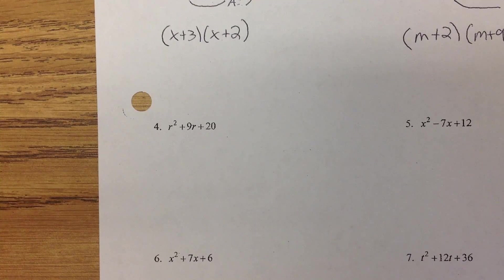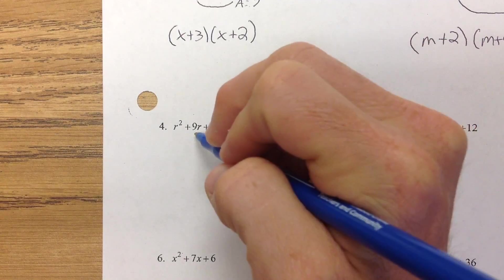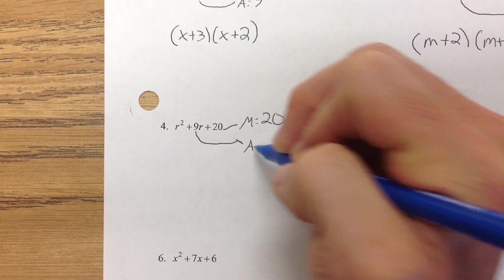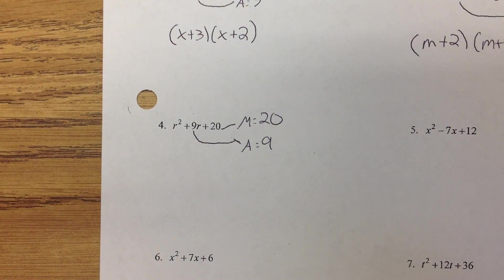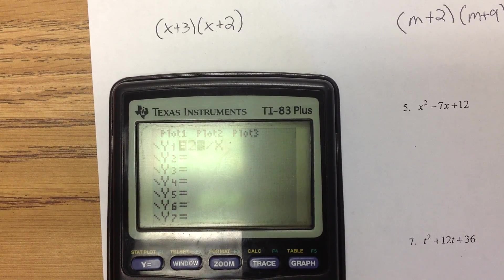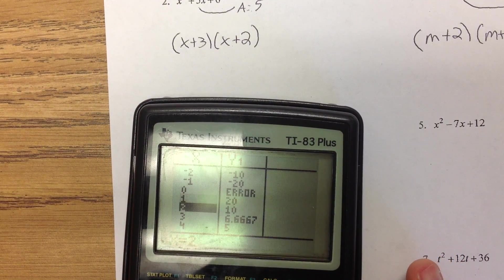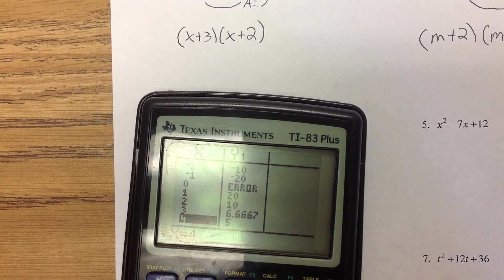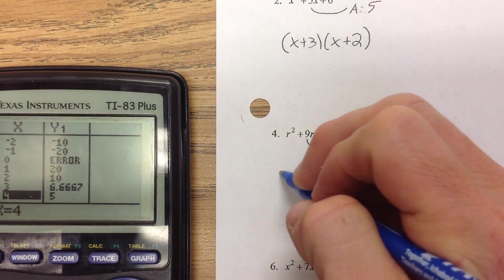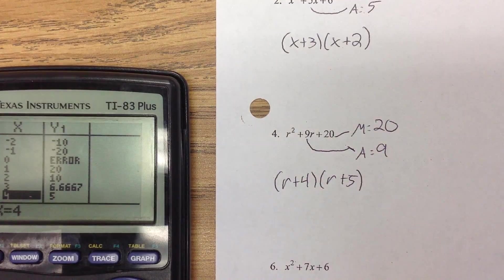Moving to number 4: we multiply to the back number, which is 20, and add to the middle number that has the variable, which is 9. We go to Y= and type in 20 divided by x, then scroll through until we find the ones that add to 9. 1 and 20 — nope. 2 and 10 — nope. That one has a decimal, so nope. 4 and 5 — yes, 4 and 5 add to 9. So this is r plus 4, r plus 5.